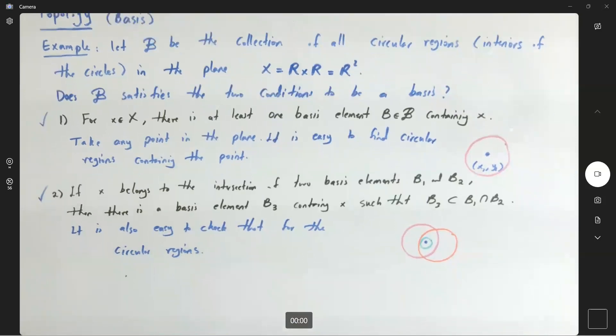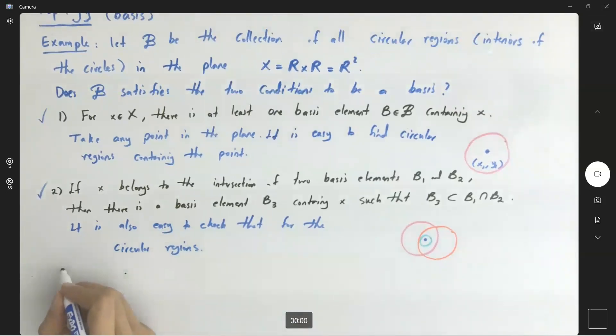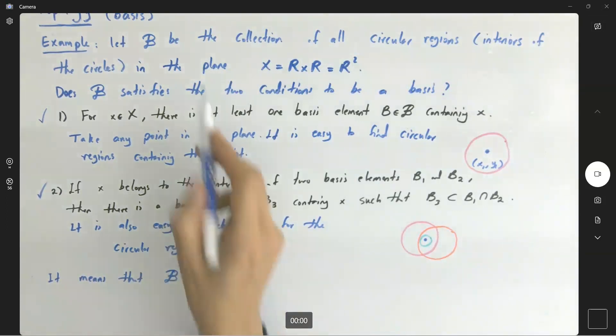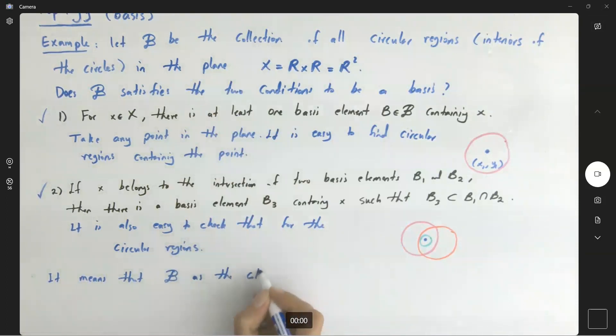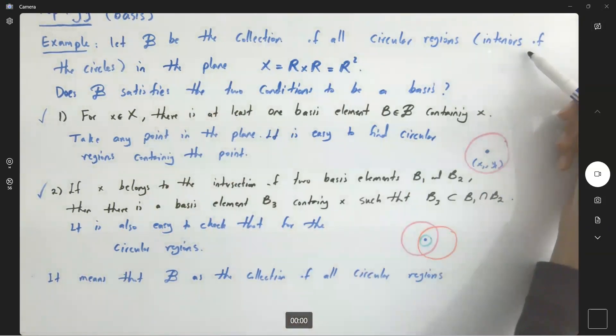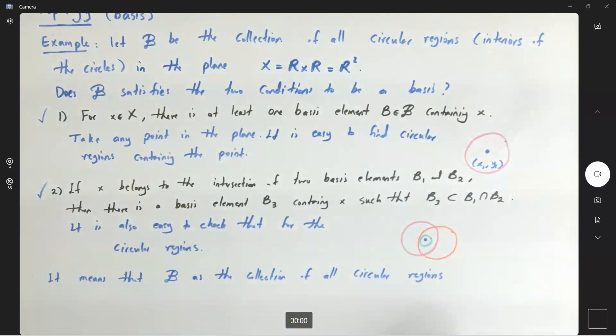So the second condition is also met. So what's the meaning of that? It means that beta, the collection of all circular regions - again, note that you're talking about the interiors of the circular regions - it means that beta in the plane forms a basis. So since you have a basis, you can generate a topology. Therefore, we can generate a topology.